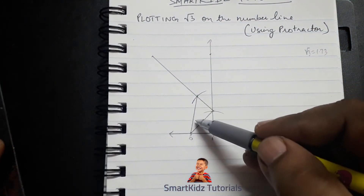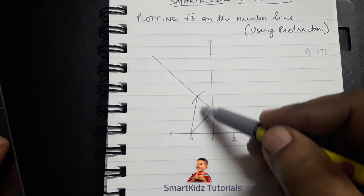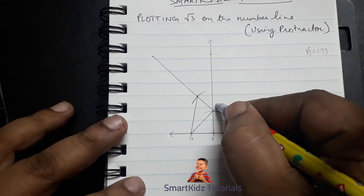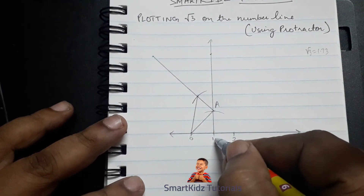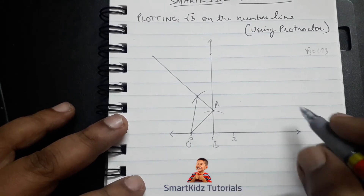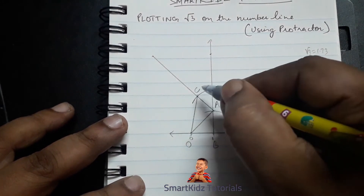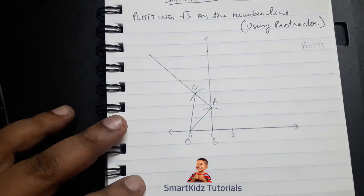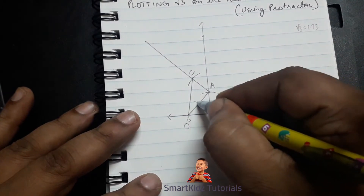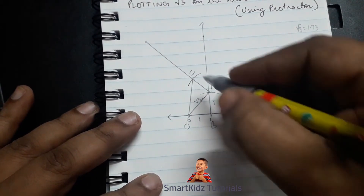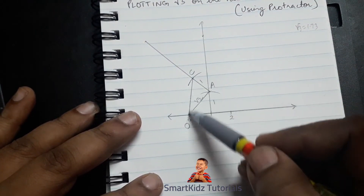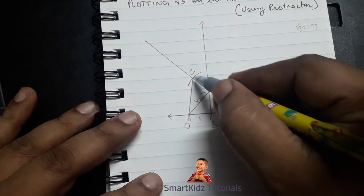What we have got is actually root 3, and I'll show you how. First, just like we did for root 2, let's give it some letters: let's say this is A, this is O, this is B, and we'll mark this as C. We know from our root 2 construction that OA is root 2, this side is 1, and we have constructed BC as 1.